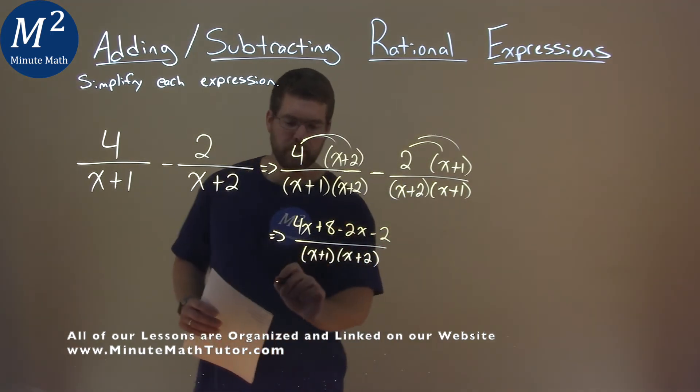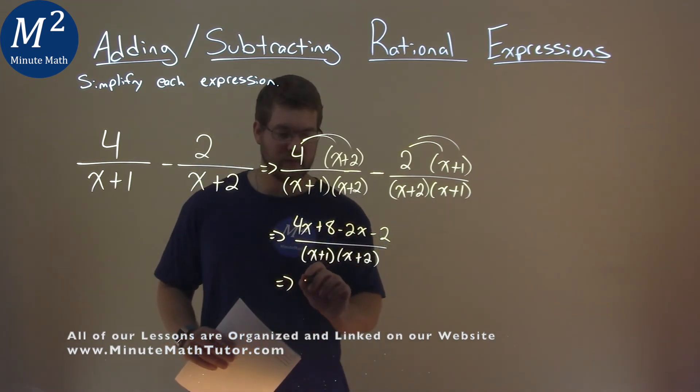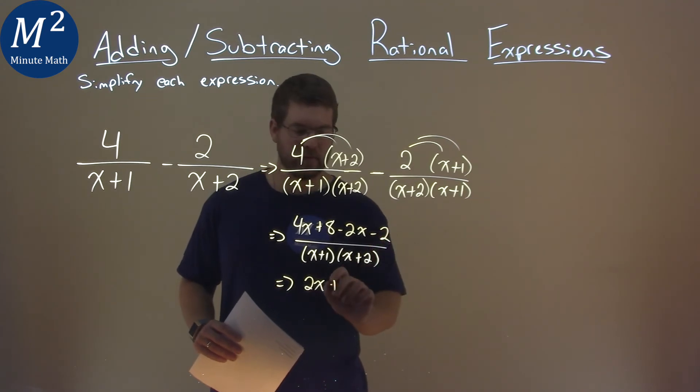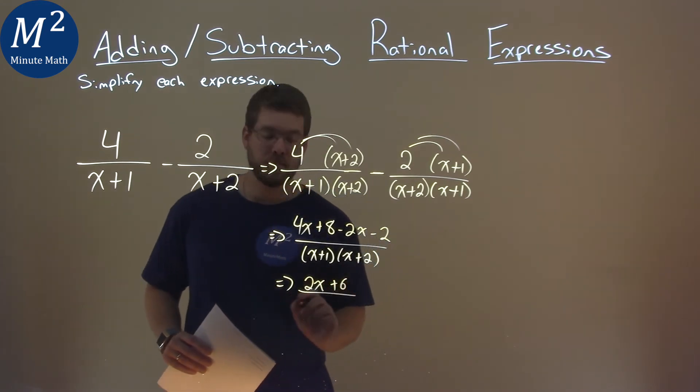We now need to combine our like terms, 4x minus 2x is 2x here. 8 minus 2 is positive 6. Denominator stays the same, x plus 1 times x plus 2.